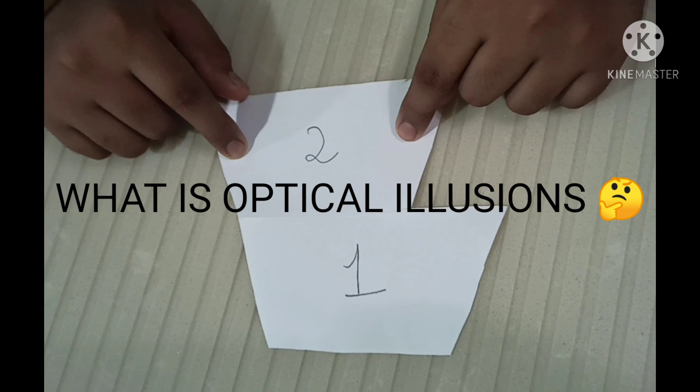Optical illusions are nothing but images which trick our brain into thinking that it is in another form. But in real life, the images are always the same. They never change.